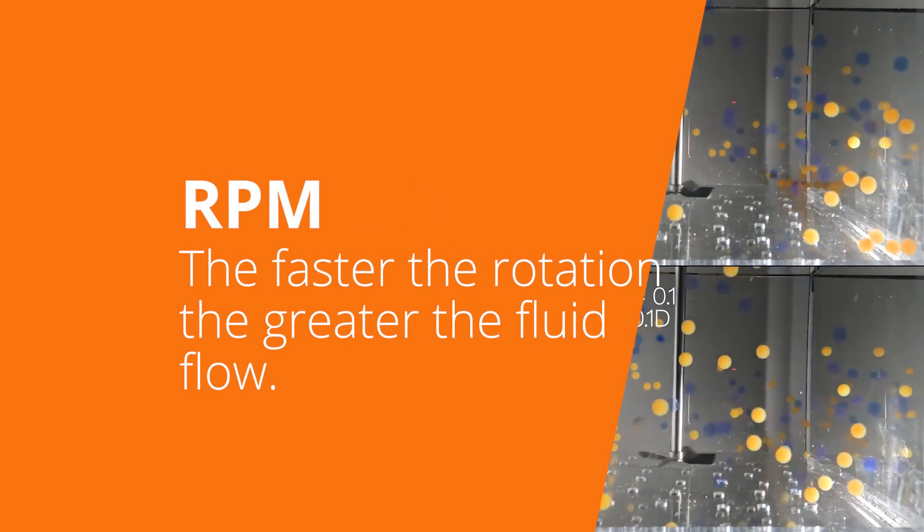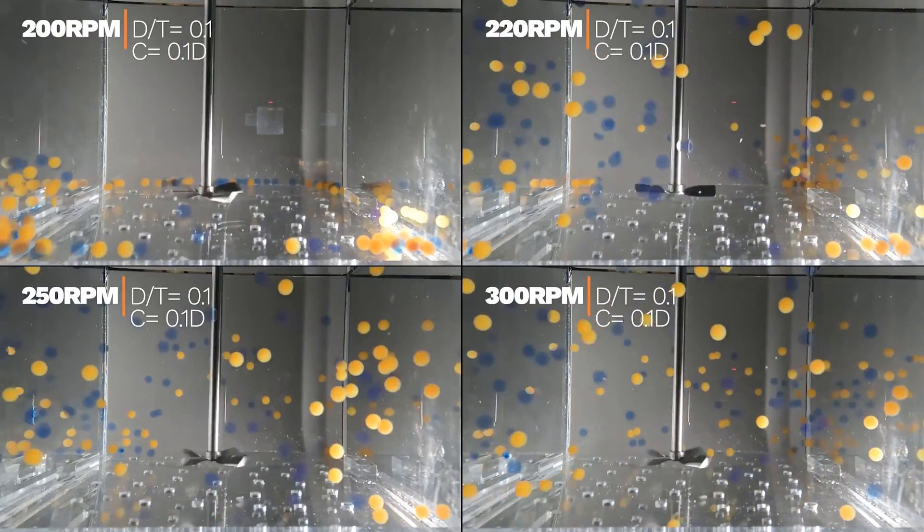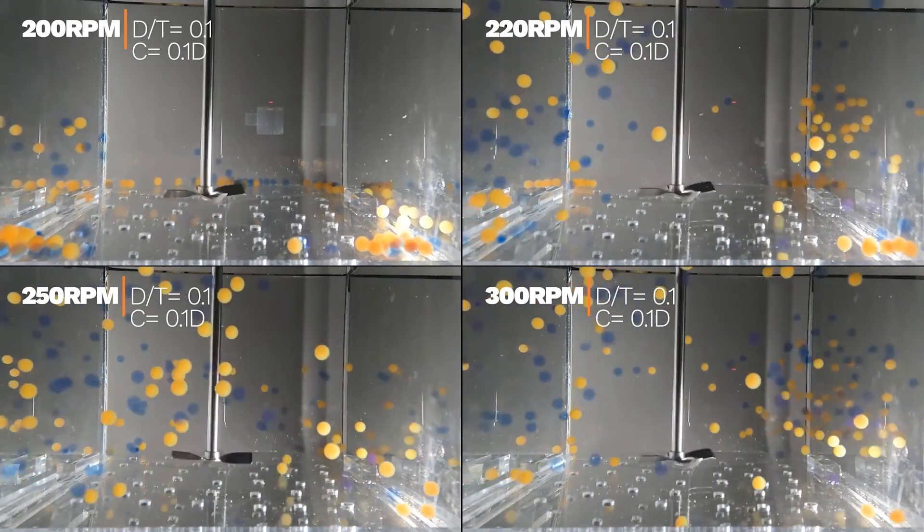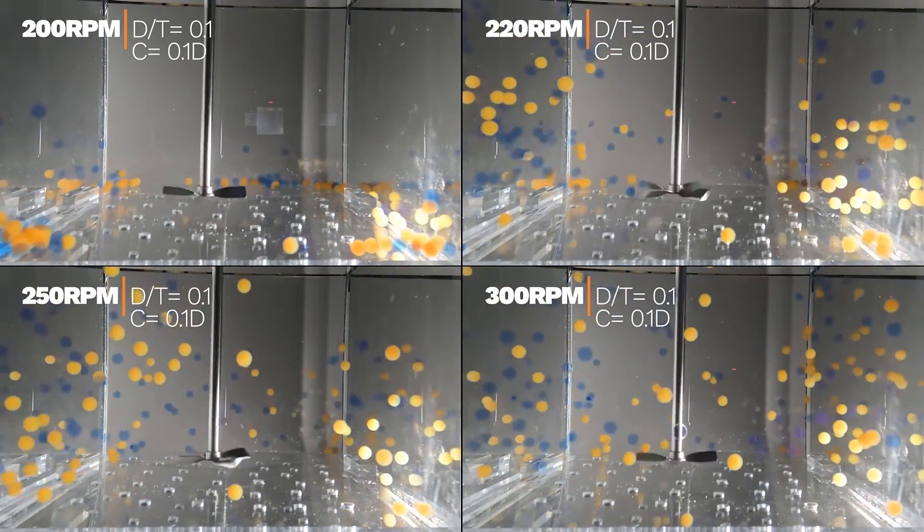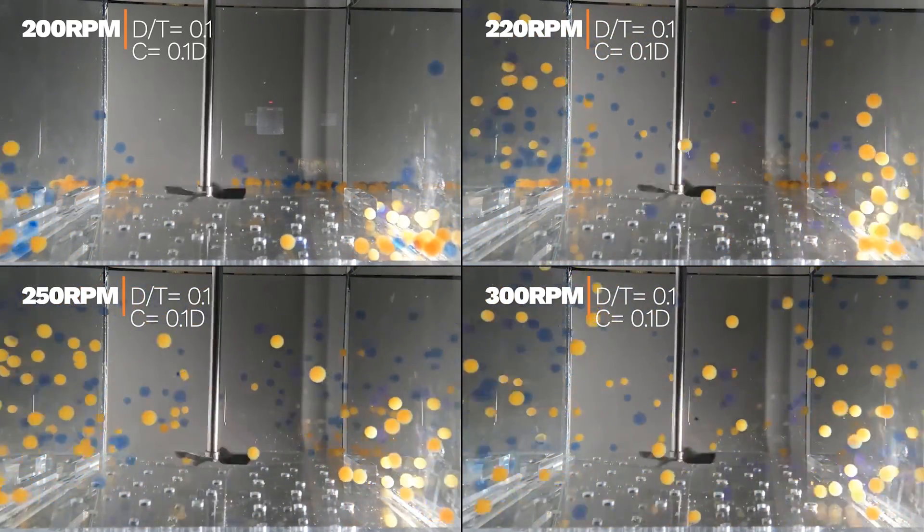RPM, or the revolutions per minute the impeller rotates, affects the pumping power. The faster the agitator moves, the faster the water flows throughout the tank.